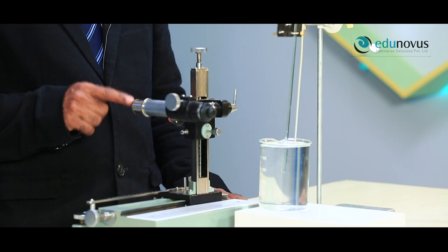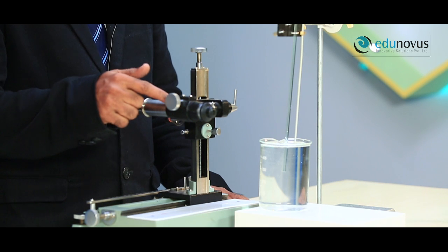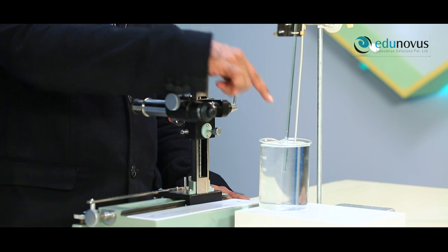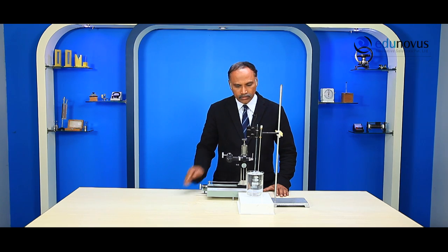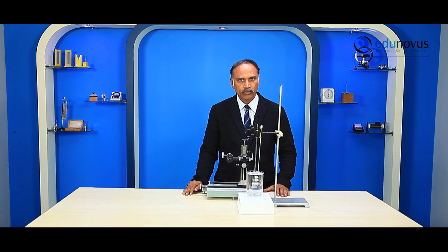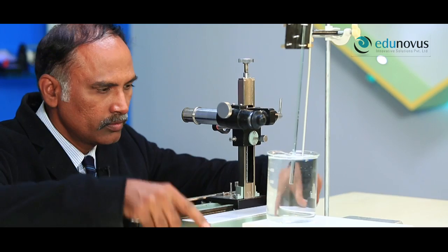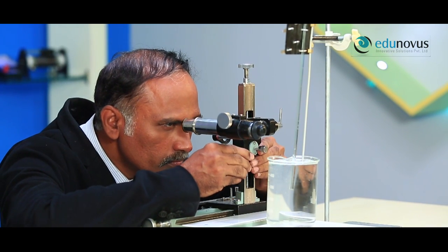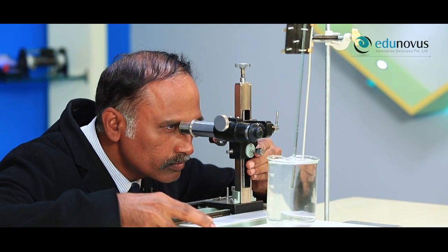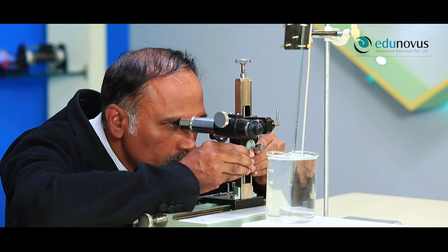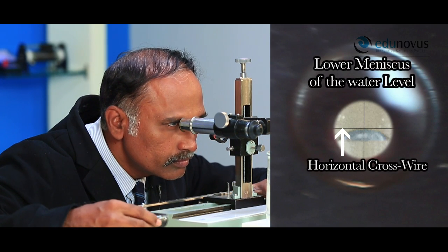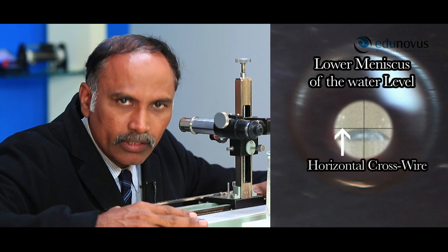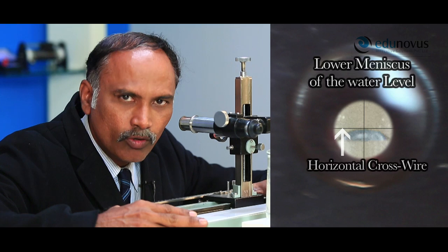Looking through the eyepiece, we focus the microscope on the lower meniscus of the water level in the capillary tube. We must take care that the horizontal cross wire in the microscope touches the lower meniscus of the water level. Here you can clearly see that the horizontal cross wire touches the lower meniscus.